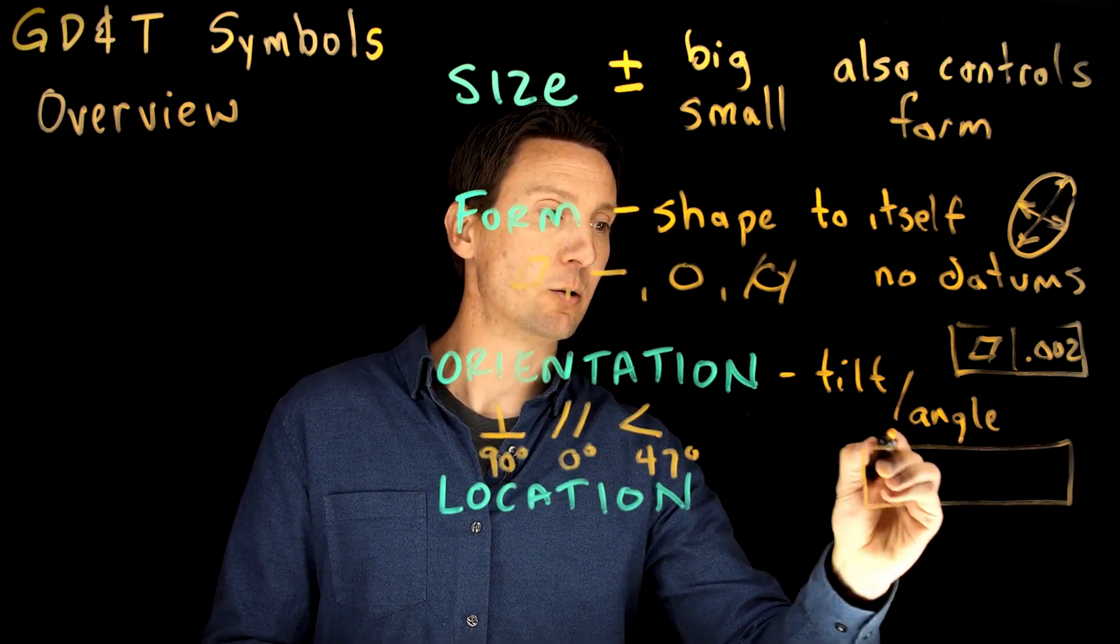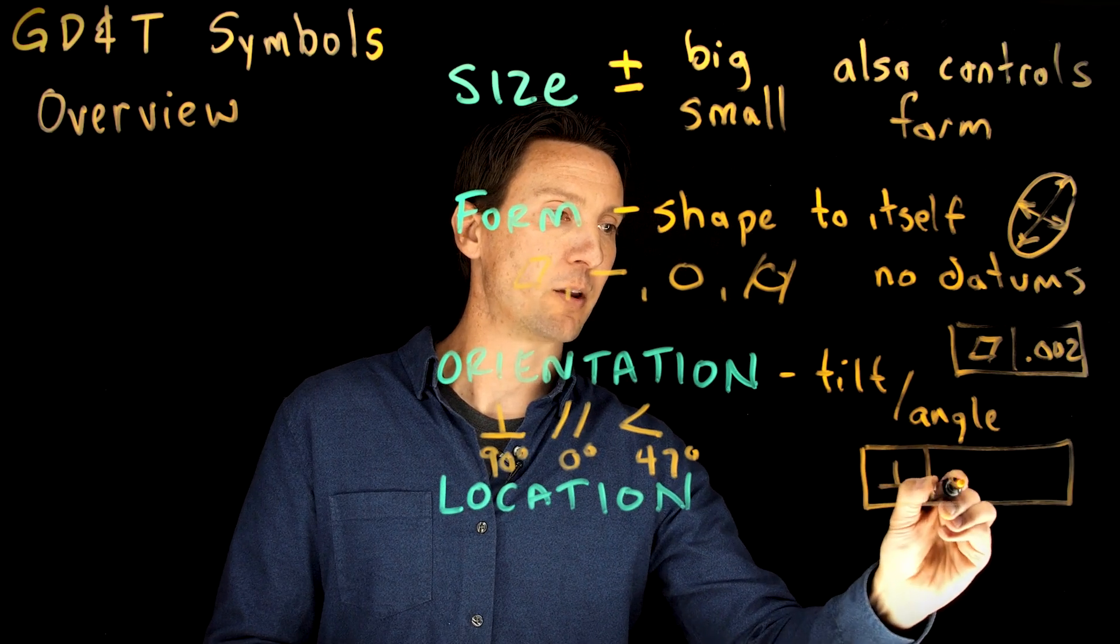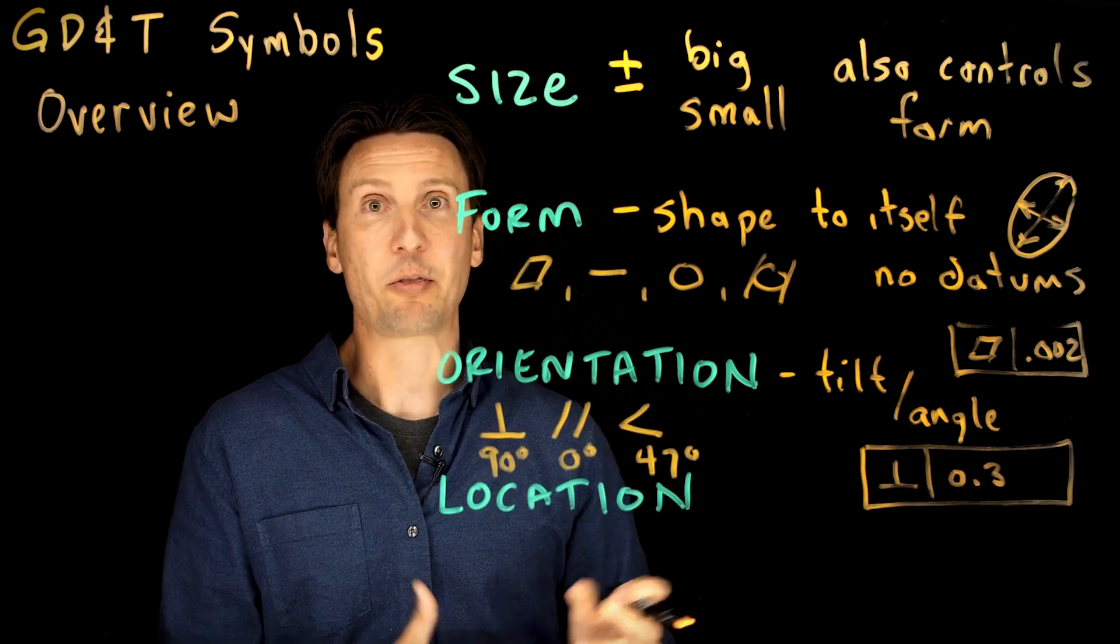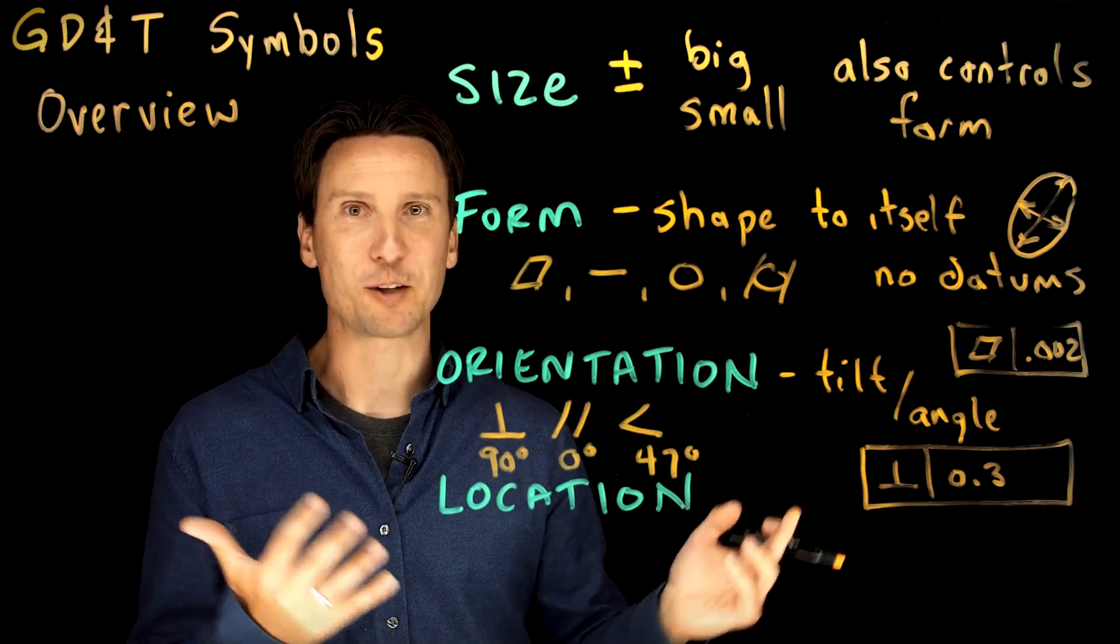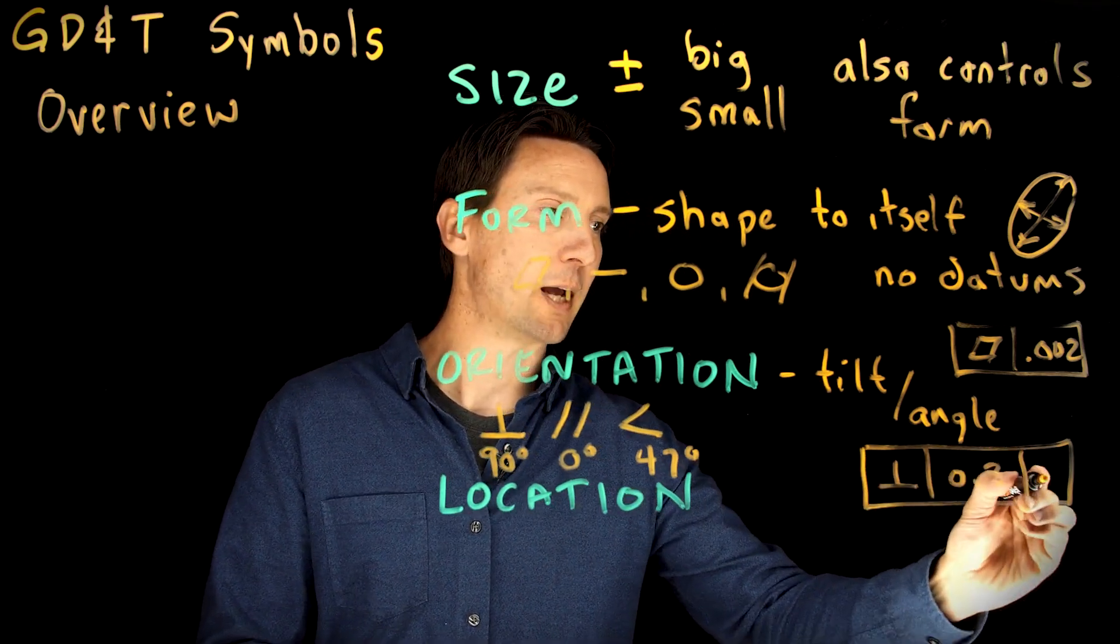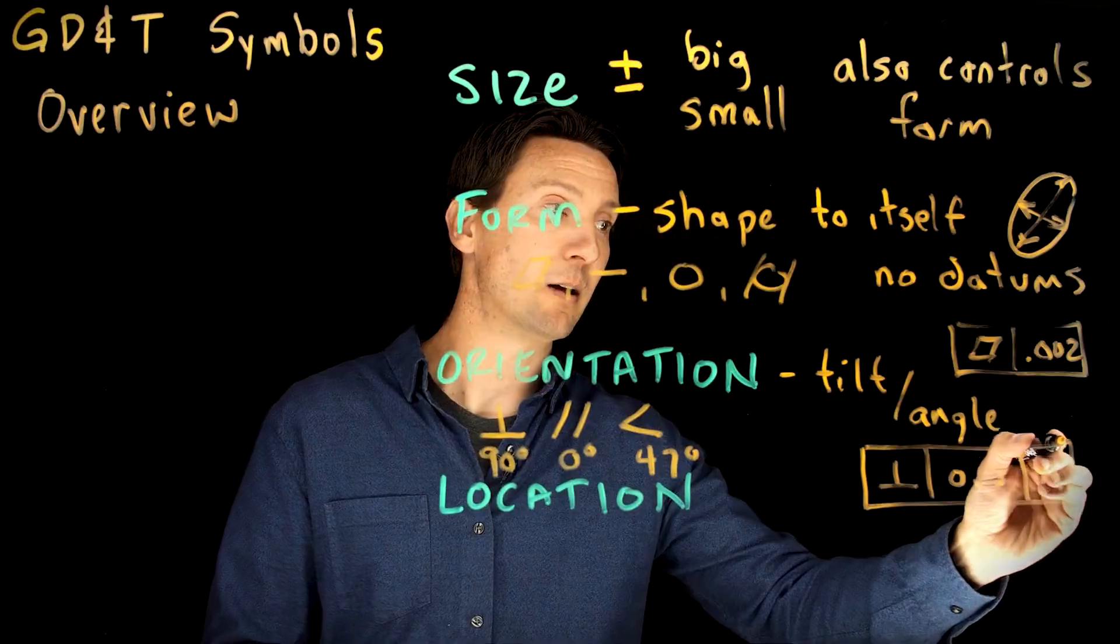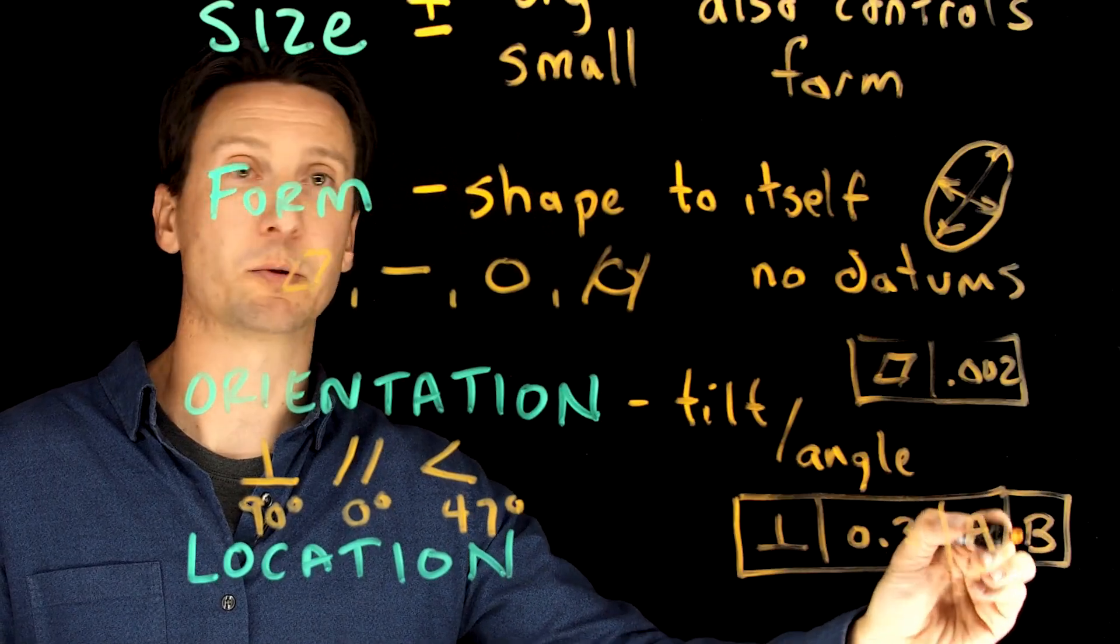Speaking of relative to, when you say perpendicular within 0.3 millimeters, you can't just say perpendicular to nothing, like perpendicular to the axis of the earth or something. You always have to reference your datum. At least one, and sometimes you could have multiple datum features here.